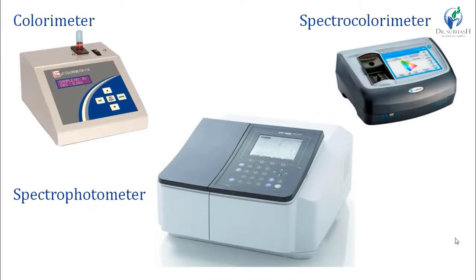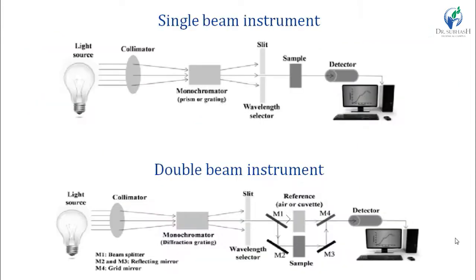These are the pictures of colorimeter, spectro-colorimeter, and spectrophotometer. Accuracy, sensitivity, and reliability increase from colorimeter to spectrophotometer. Now, what does single beam and double beam instrument mean? Colorimeter and spectro-colorimeter are of single beam type only, and spectrophotometer can be either single beam or double beam.